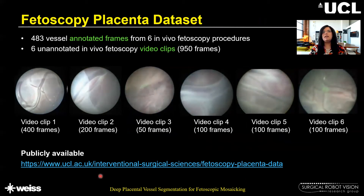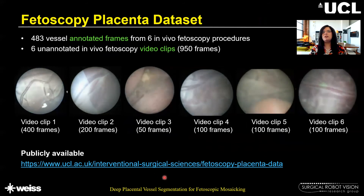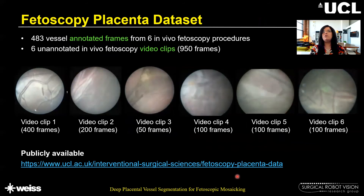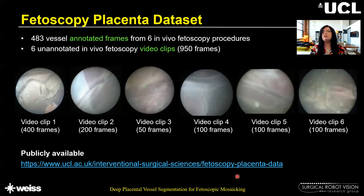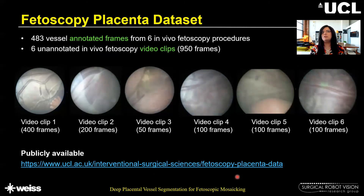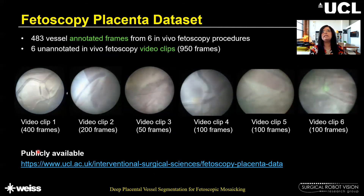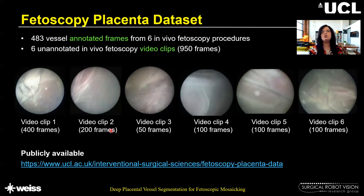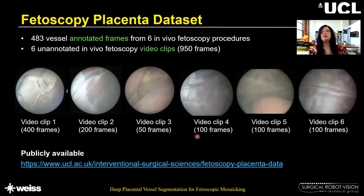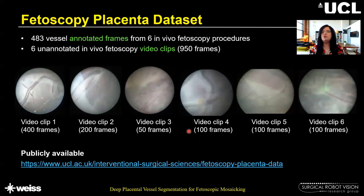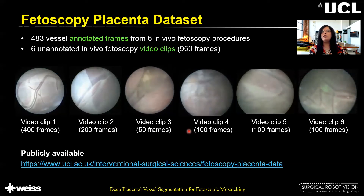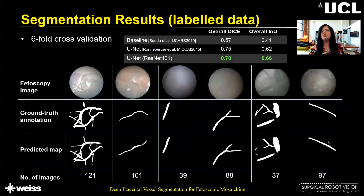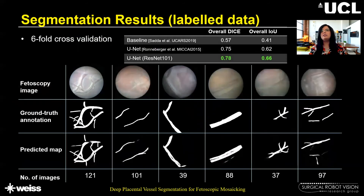The fetoscopy placenta dataset is available on our center website using the link shown here. The dataset contains 483 vessel-annotated frames from six in vivo fetoscopic procedures. The dataset also contains six unannotated in vivo fetoscopy video clips shown here, which are continuous video frames used for evaluating the registration framework.